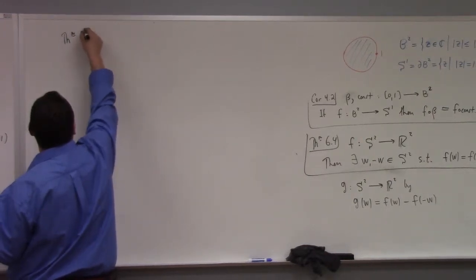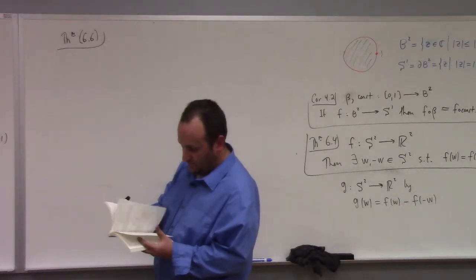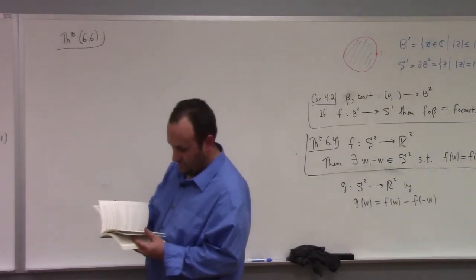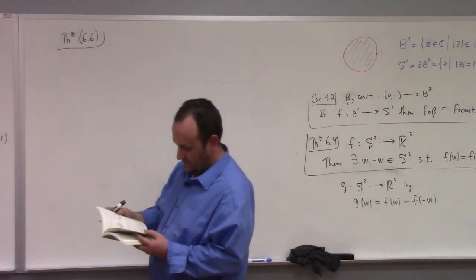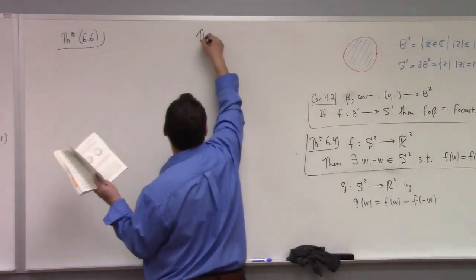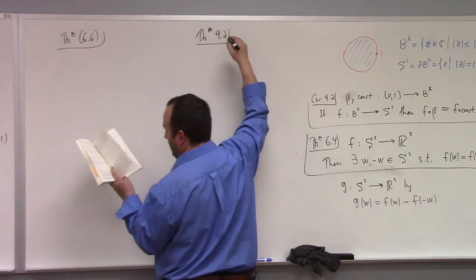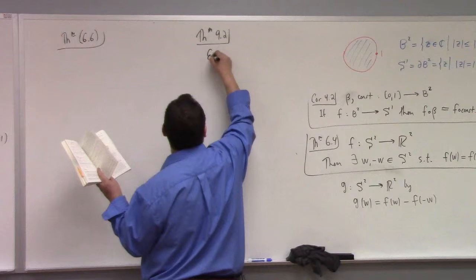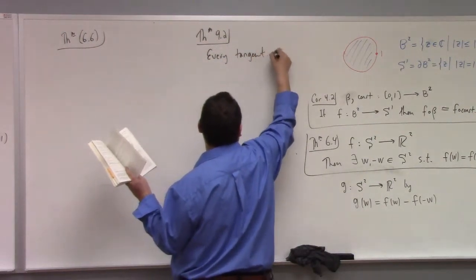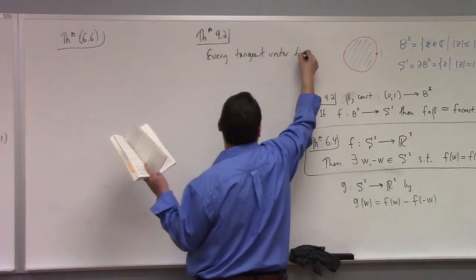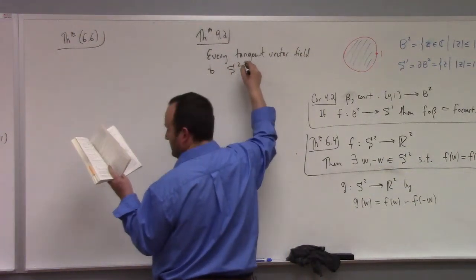That is in fact Theorem 9.2. It says the following: every tangent vector field to S² has a zero.